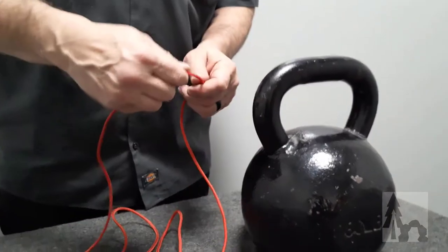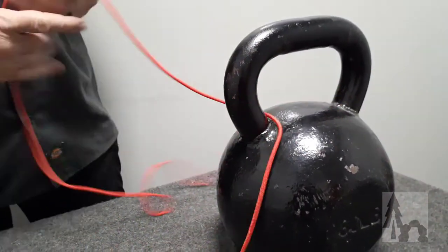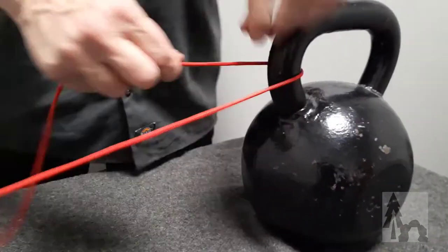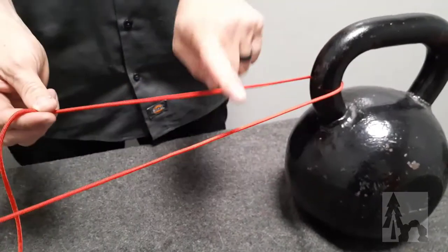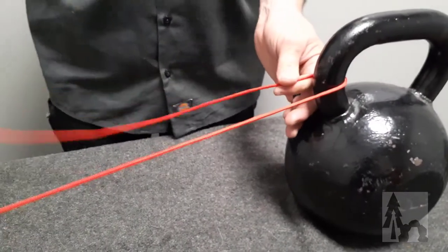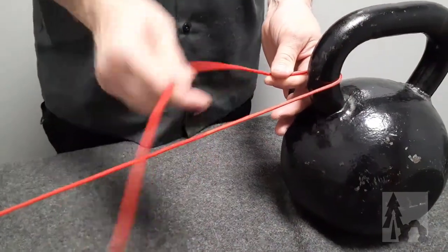So you probably see the taut line hitch in some other videos out in the field, but what we're going to do is we're going to go around the tree. I've got a lot of extra line here, but essentially I'm going to take the working end. There's my standing end closest to you, and I'm going to cross over my standing end.